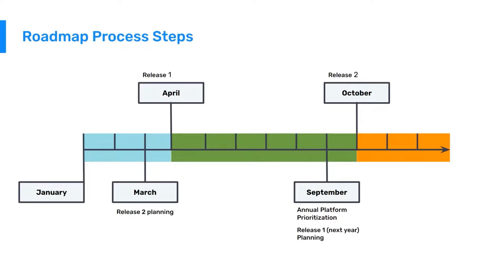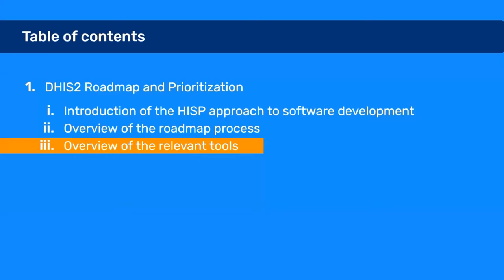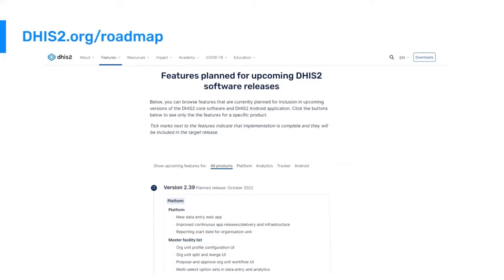We also have an annual platform prioritization that takes place in the fall, meant to consider progress so far, any new priorities that have come in, and plan further into the future. Now we'll take a look at some of the relevant tools associated with this process.